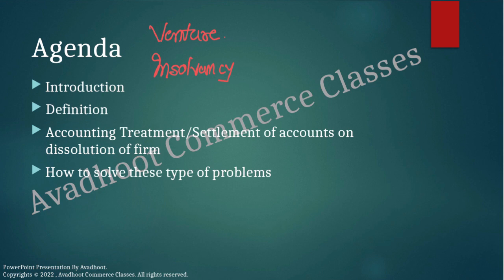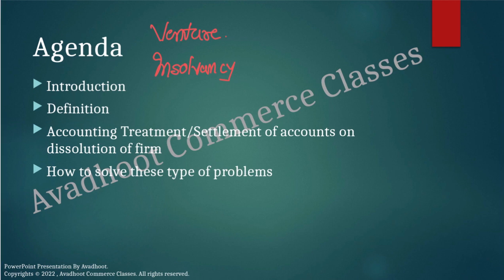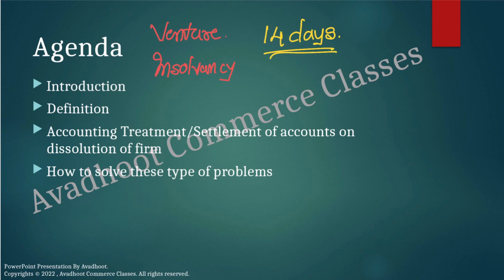Partnership at will can be dissolved by giving a notice of 14 days. One, two, or three partners can give the notice for dissolution of the partnership firm. 14 days is the most important point to remember.